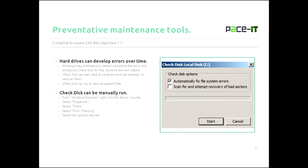You can also run check disk manually. From Windows Explorer, right-click on the disk or volume you want check disk to run on, select Properties, then Tools, then Error Checking, and you get to select the desired options.